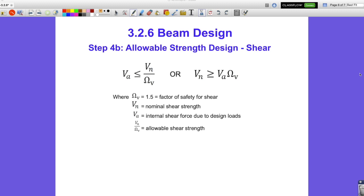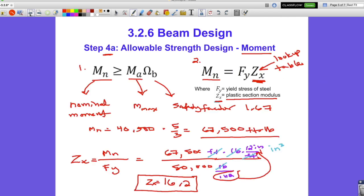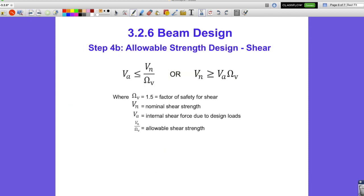Okay, welcome back. The next step in the allowable strength design method is to check the shear. It's very similar to how we did the moment in the previous step. We just need to use the appropriate safety factor. Essentially we've got the actual shear, that's what you determine the maximum shear, and the safety factor that they give us for shear is 1.5.